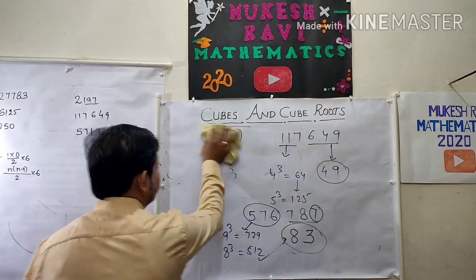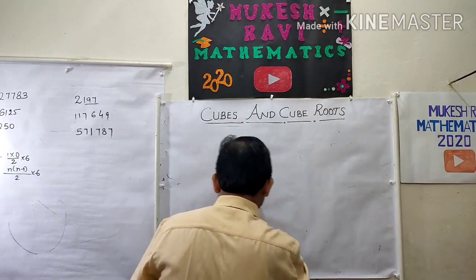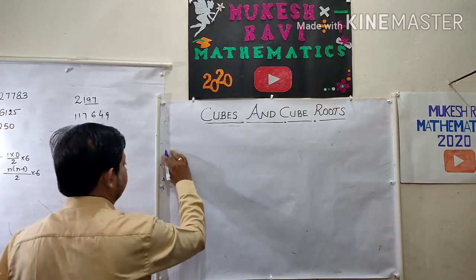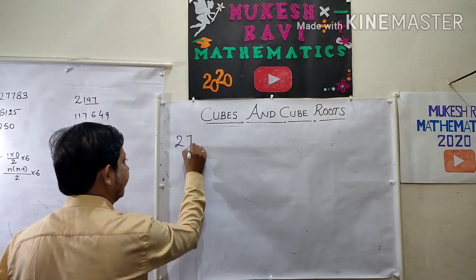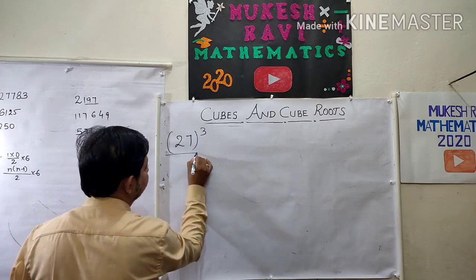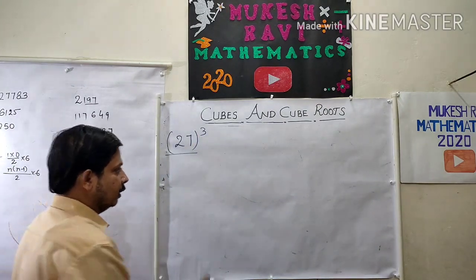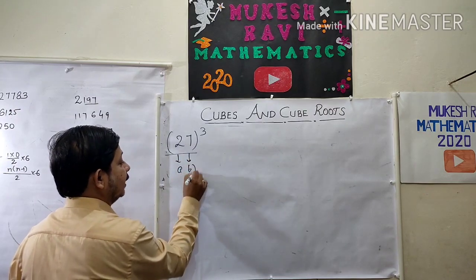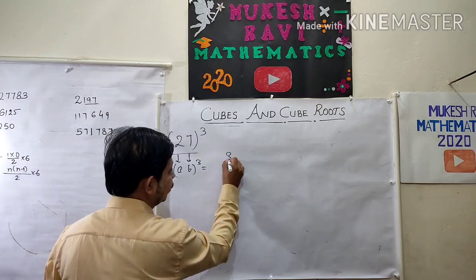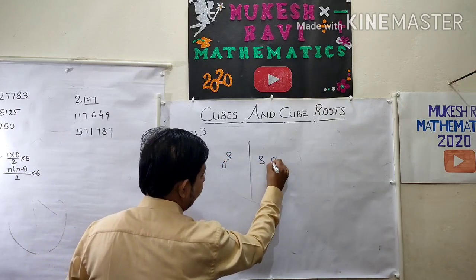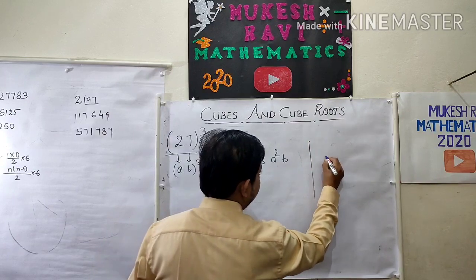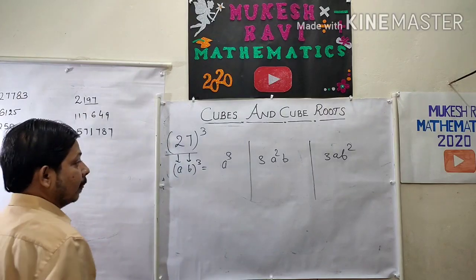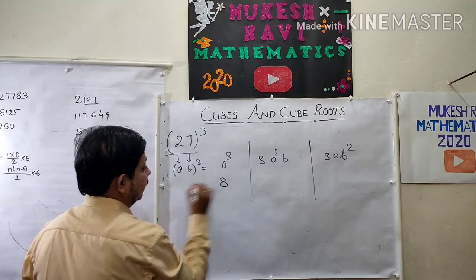Children don't want long calculations. Suppose a 2-digit number like 27 — how to find the cube of 27? I will give you a shortcut. Call the digits A and B. My formula is: A³, then 3A²B, then 3AB², then B³. For A = 2 and B = 7: A³ = 2³ = 8, and B³ = 7³ = 343.